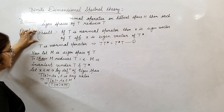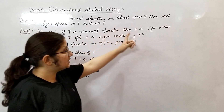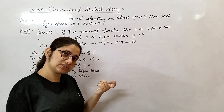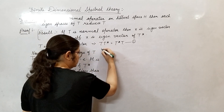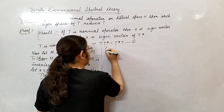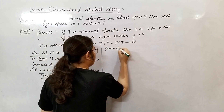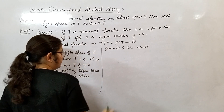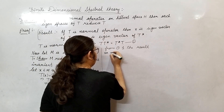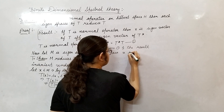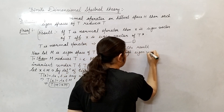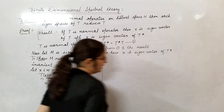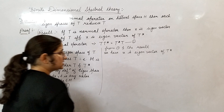Now, x is an eigenvector of T. We will use the result: if T is a normal operator and x is an eigenvector of T, then x is an eigenvector of T* also. From condition one and this result, we have that x is an eigenvector of T* as well.